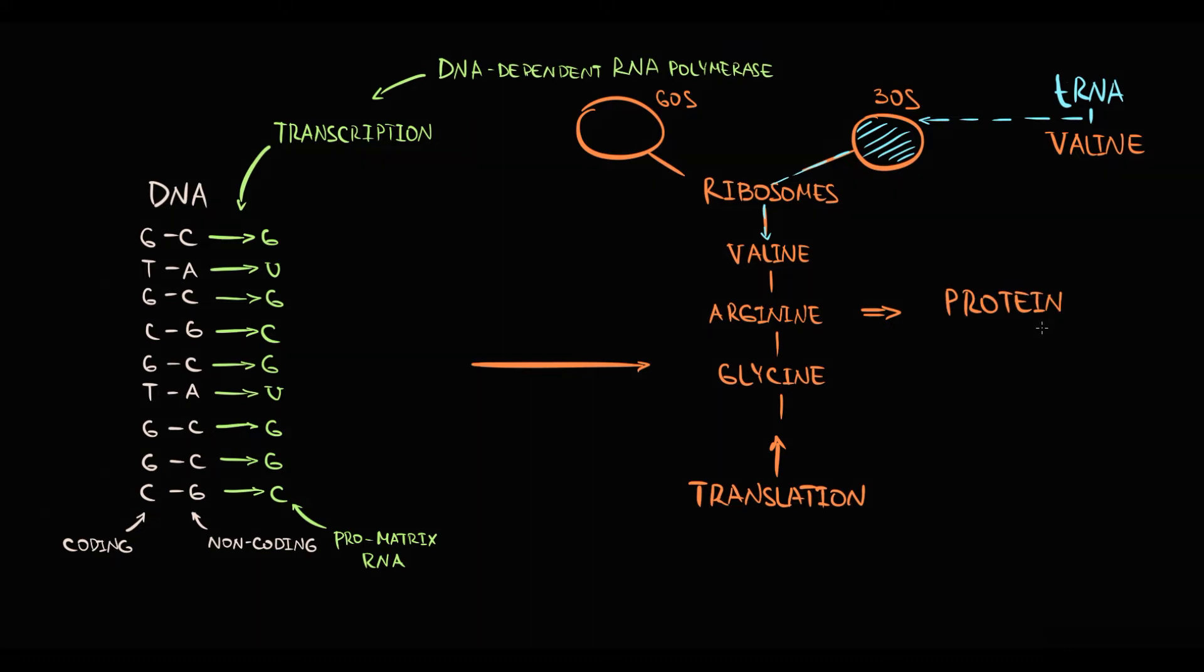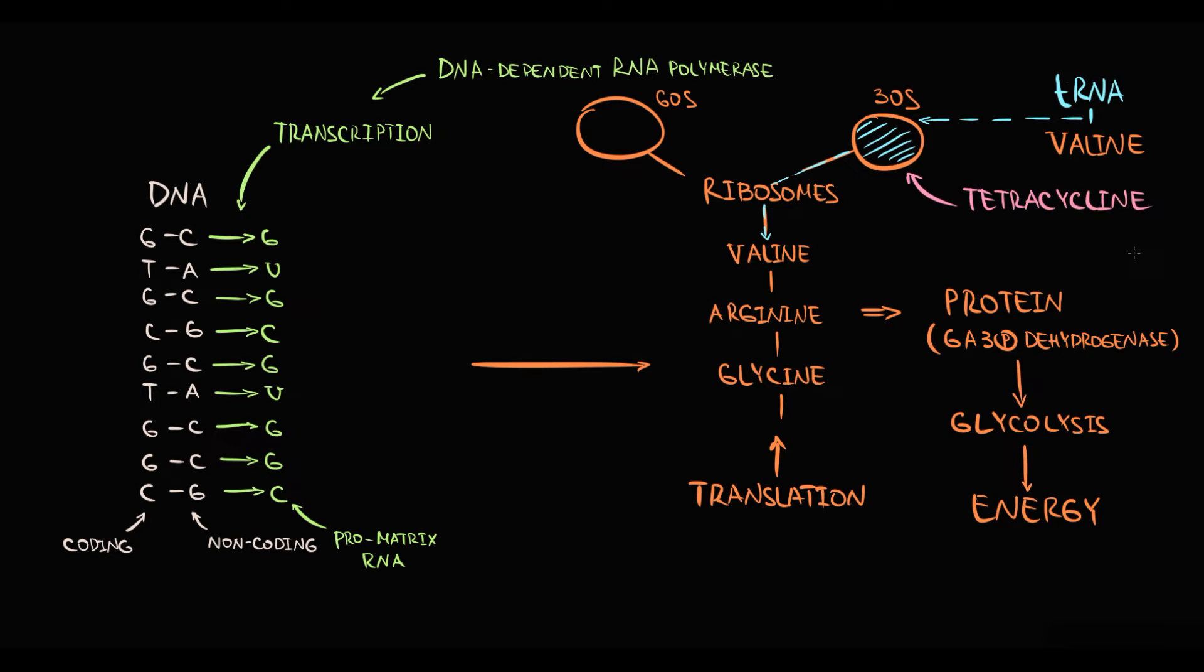Overall, this process is called translation, and a particular amount of amino acids form protein. And let's suppose that this protein is an enzyme glyceraldehyde-3-phosphate dehydrogenase that participates in bacterial glycolysis. And glycolysis, as we know, is a major source of energy for bacteria. So what is tetracycline doing? Tetracycline binds to 30S ribosome subunit and blocks it. Thereby, transfer RNA molecule cannot deliver amino acid to ribosome. And without amino acid, protein cannot be formed.